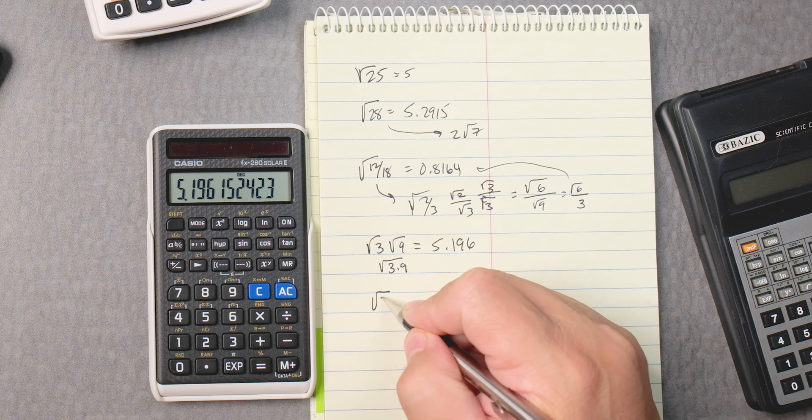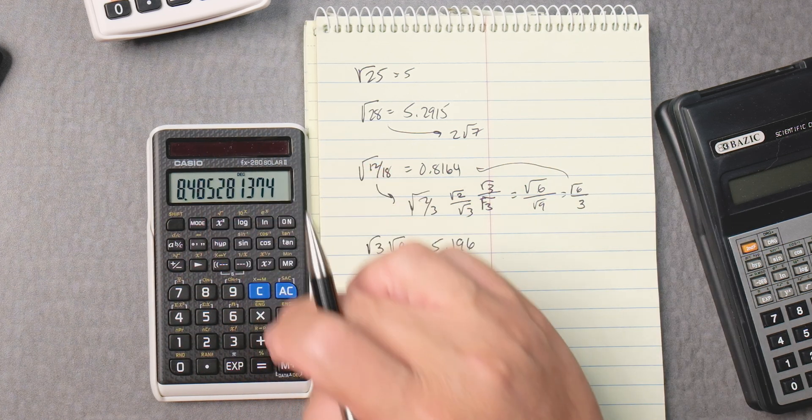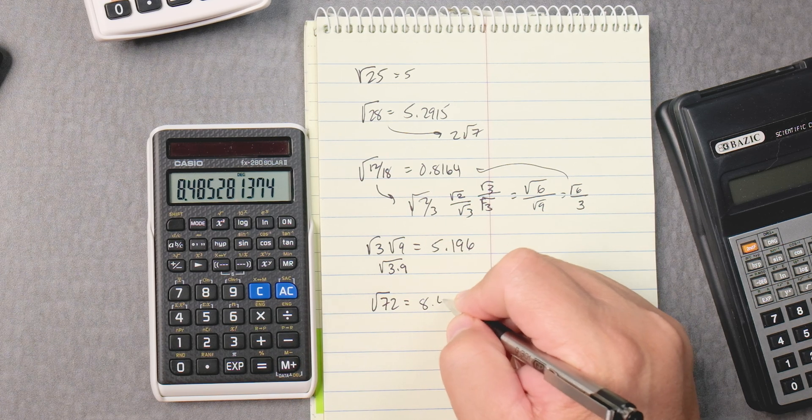And then one more. Let's say the square root of 72. 72, take the square root, and you've got the answer 8.485.